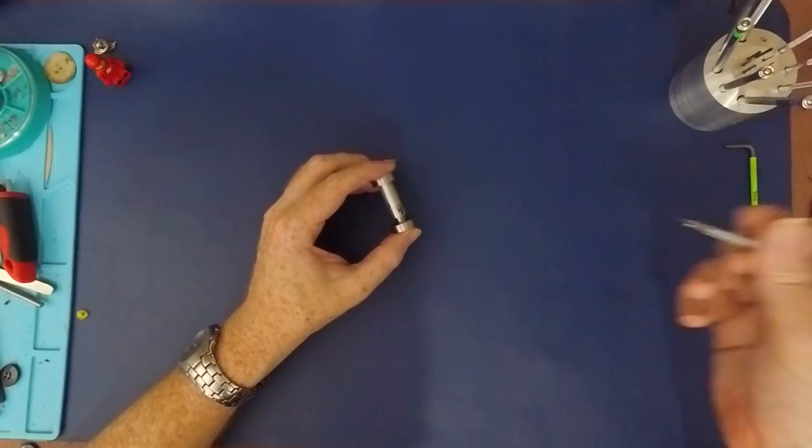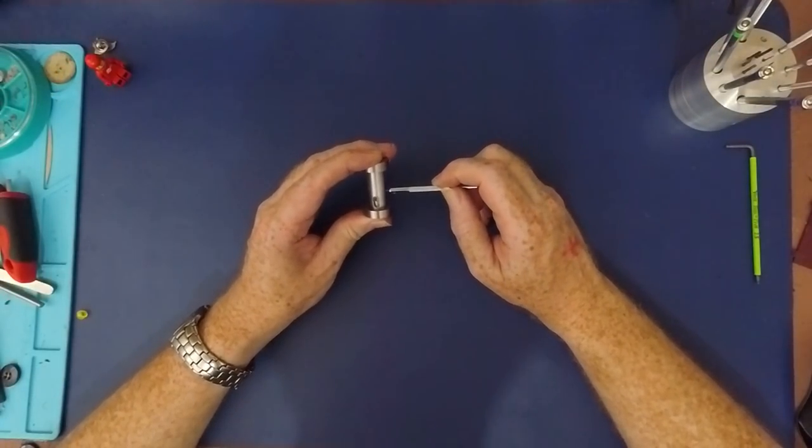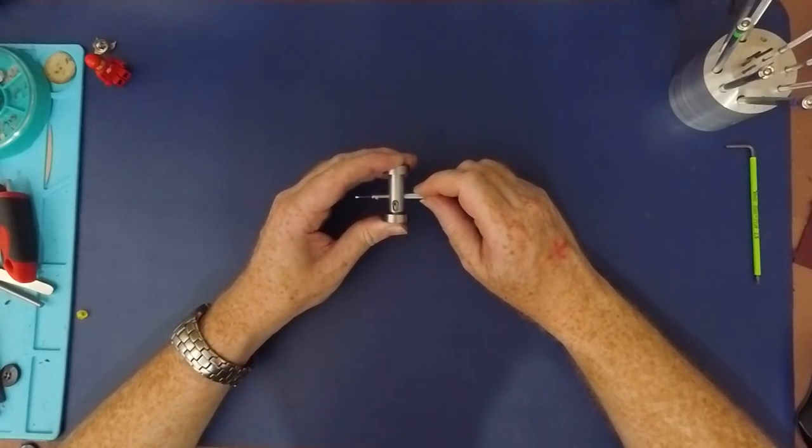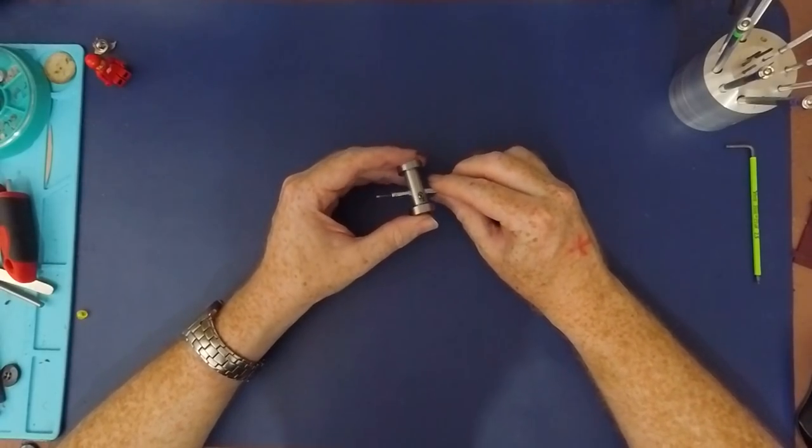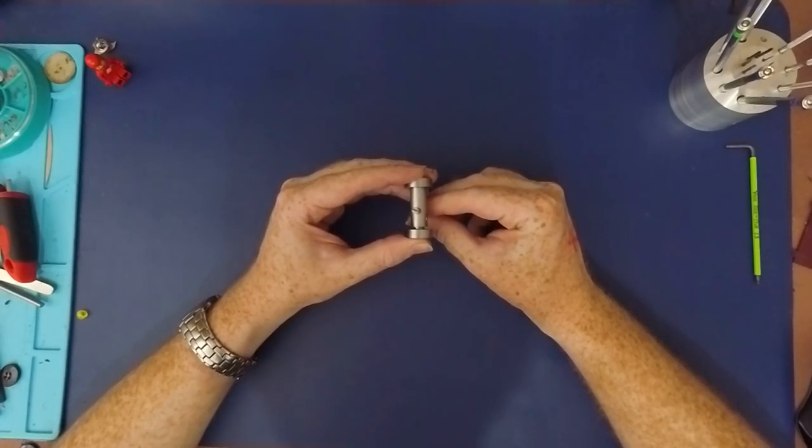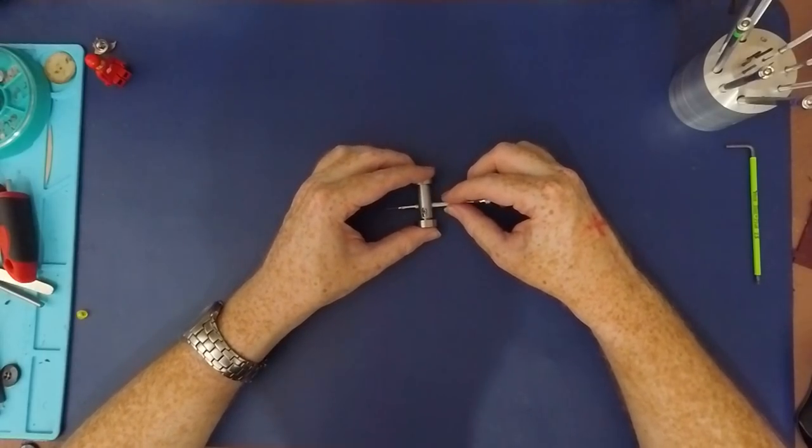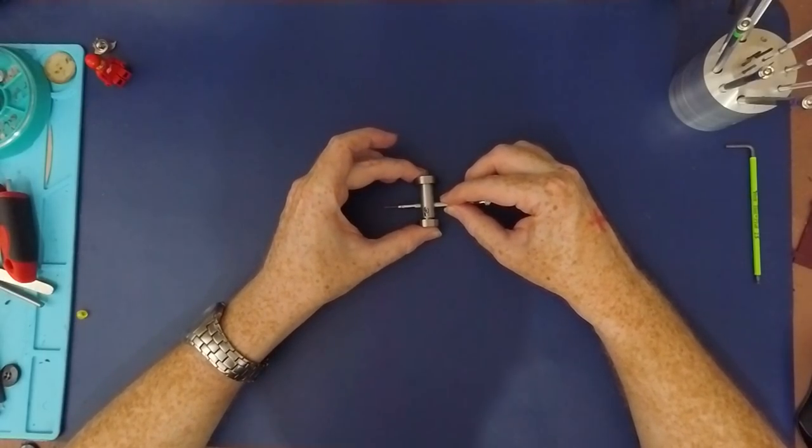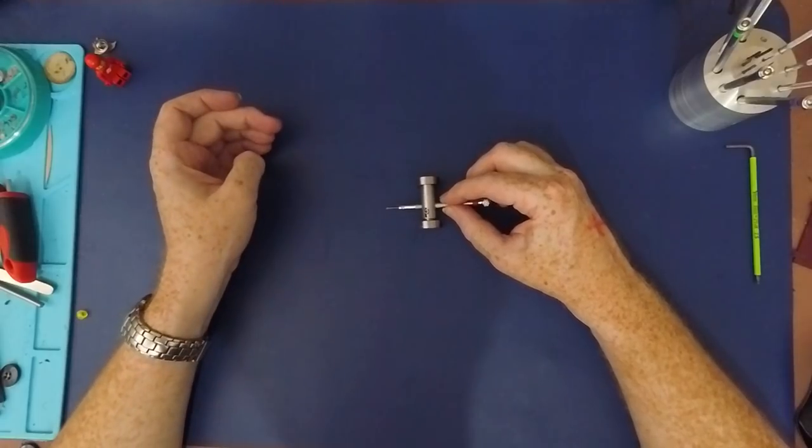The tool works by clamping a screwdriver in the central hole, like this. The blade has to be twisted until it's parallel with the central shaft, and then the angle is adjusted by the amount the screwdriver extends to the end.